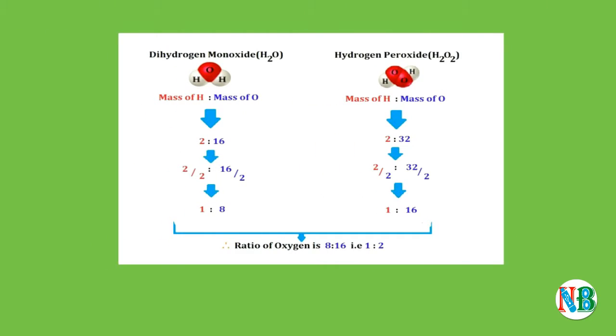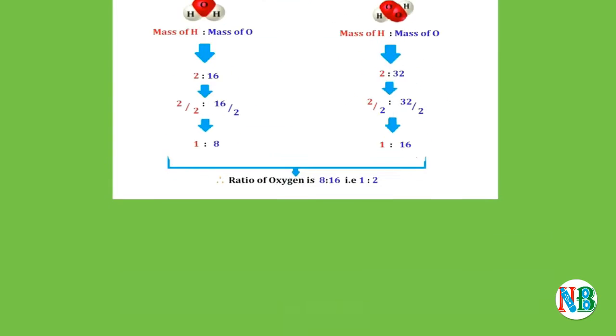For example, let's take dihydrogen monoxide and hydrogen peroxide. On comparing both, ratio of oxygen is 1:2, which is in the ratio of small whole numbers. Thus proves the law of multiple proportions.